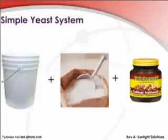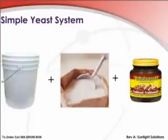Building a yeast CO2 reactor is very easy. First, take a 5 gallon bucket and fill it 3 quarters of the way with water. Then add 6 cups of sugar and 1 tablespoon of yeast from your local grocery store. The yeast generator will create CO2 in relatively high amounts for a period of 10 to 14 days. Next, to distribute the CO2 to your garden, simply run a high powered aquarium pump screwed to the lid of your container.